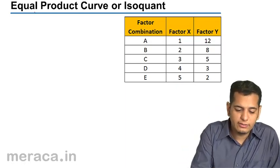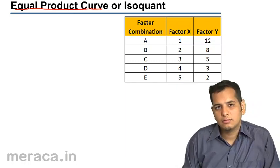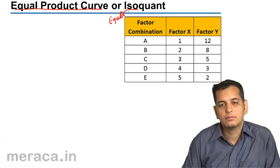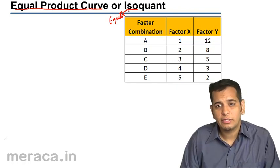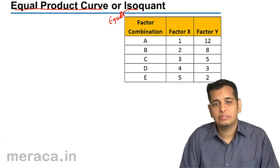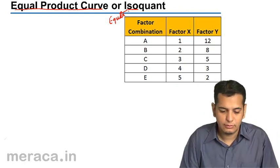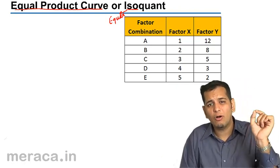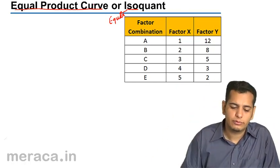Isoquants are also called equal product curves. 'Iso' means equal, so isoquant refers to the quantity of factors of production which give us an equal level of output. That is why it is also called the equal product curve — all the combinations on this curve give us an equal level of output or equal level of production.